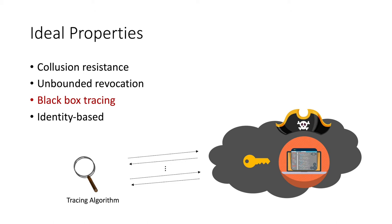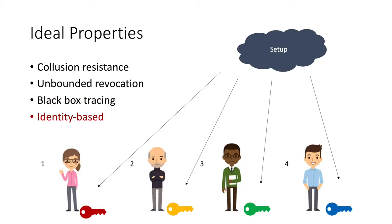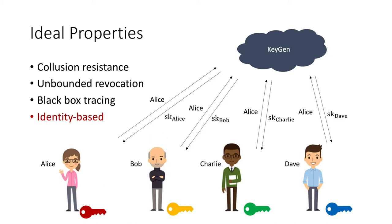The third property is black-box tracing: since the decoder a malicious member generates may be in any form and can be obfuscated, we want the tracing algorithm to work using only the input and output behavior of the decoder box. Finally, another property is support for an unbounded number of users. In many existing schemes, a setup algorithm takes a bound on the total number of users and no new user can join afterwards. It would be nice if the scheme is identity-based, so any new user can receive a decryption key corresponding to their identity, and an unbounded number of users can join.